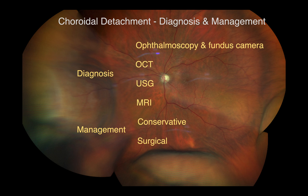The first test we can do to assist in the diagnosis of choroidal detachment is wide-field retina camera imaging, which enables documenting of more peripheral choroidal detachment. Gonioscopy may also be used to confirm the presence of secondary angle closure glaucoma.